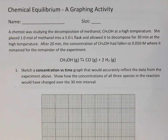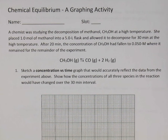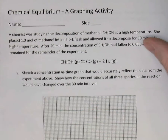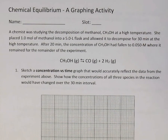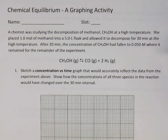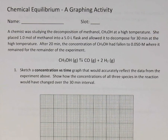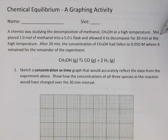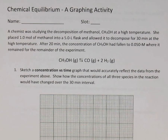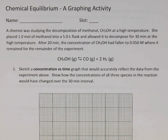In this video we're going to take a look at an introduction to chemical equilibrium through graphing. If you've got this assignment on Edmodo or our website, you should have it printed — try the assignment yourself and then check your answers here. We're told a chemist was studying the decomposition of methanol CH₃OH at a high temperature. She placed a mole of the methanol into a 5-liter flask and let it decompose for 30 minutes. At 20 minutes, the concentration of methanol had fallen to 0.05 molar, where it remained for the remainder of the experiment.